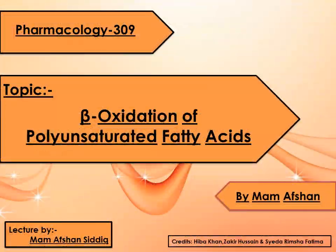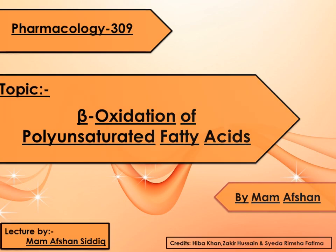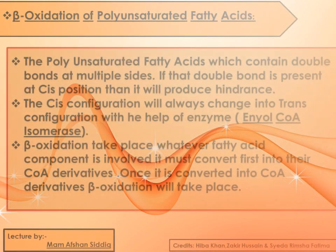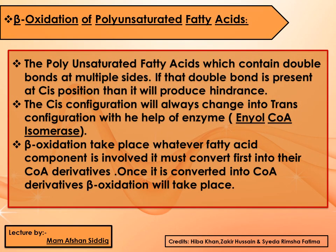It is important to know what will happen with the polyunsaturated fatty acid. Polyunsaturated fatty acids contain double bonds at multiple sites, and if those double bonds are in the cis position, they will definitely produce hindrance — as discussed with monounsaturated fatty acids, using palmitooleic acid as an example, which contains one single double bond at the delta 9 position.